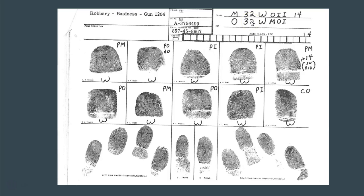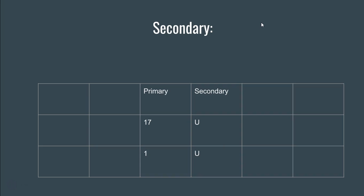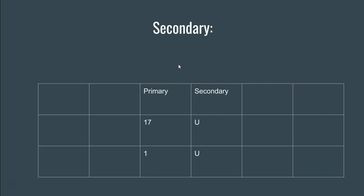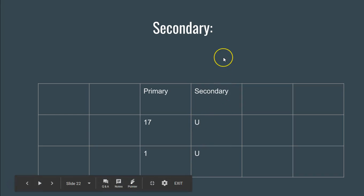The next step is what's called the secondary. Secondary goes just to the right of the primary, so it goes in this fourth position. If we're looking at our boxes for our Henry, we have the primary in the third column, and then the secondary goes in the fourth column, just to the right of the primary. Just like with the primary, there's going to be a numerator on top and a denominator on the bottom.